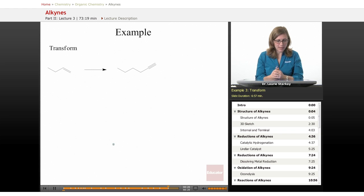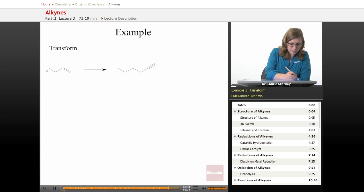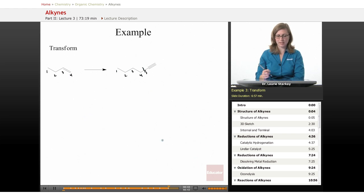Okay, one last example. Let's imagine going from this alkene to this alkyne. We have one, two, three, four carbons here, and one, two, three, four carbons here. So it looks like this is a new carbon-carbon bond.